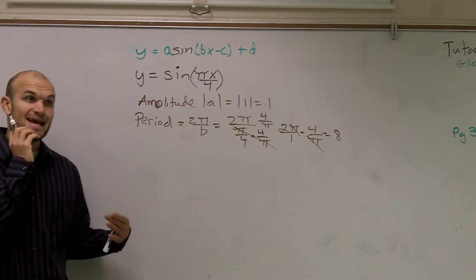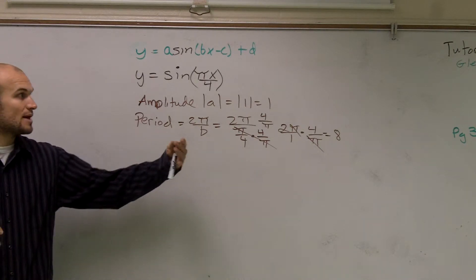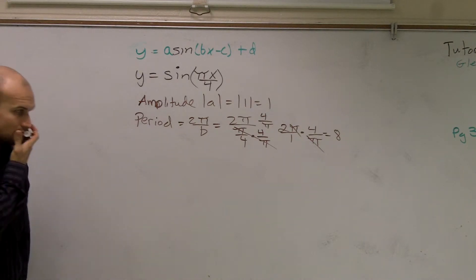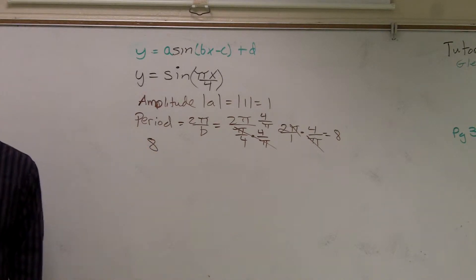So therefore, it's going to take, it's going to be all the way to 8 when my graph is completed in one cycle. Then, remember, I told you guys, on a sine graph, there's four important points, right?